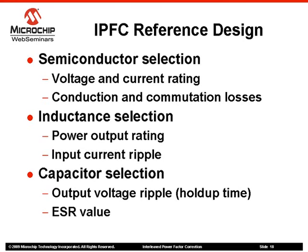Inductance selection is related to output power rating — the higher the output power, the larger the inductance. Another aspect to consider is the required input current ripple. The output capacitor is chosen so that the output voltage ripple is within specification, and it also depends on the minimum holdup time so controllers can act before the capacitor loses its charge. The effective series resistance, or ESR, also affects output voltage ripple; therefore, a capacitor with the lowest possible ESR is recommended, which can be achieved by coupling two capacitors in parallel if board layout permits.